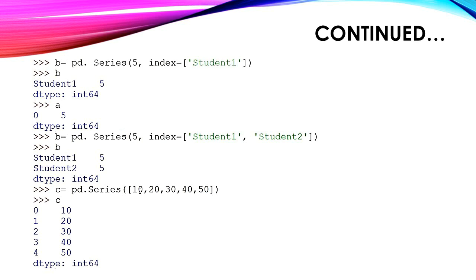In the previous example, by default the index position starts with 0. Now we can give the index a name. The next example shows: b = pd.Series(5, index=['student1']). It is important to know that whenever you give an index name, it should always be a list. b is the variable name where the series elements are stored. The output shows the index name is student1 and the element is 5.